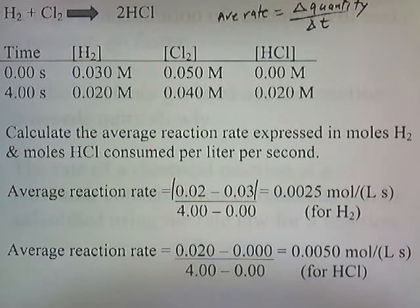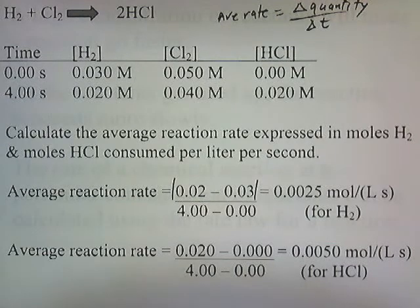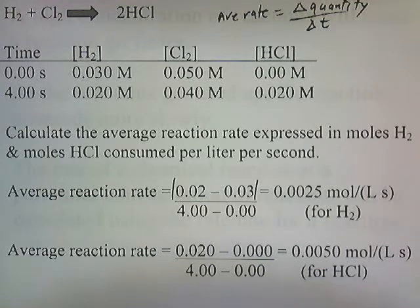This reaction takes place in a container, and the chart below shows the concentrations of H₂, Cl₂, and HCl at T equals 0 seconds and T equals 4 seconds. We're going to calculate the average reaction rate expressed in moles of H₂ consumed per liter per second, and also the average reaction rate expressed in moles of HCl produced per liter per second.